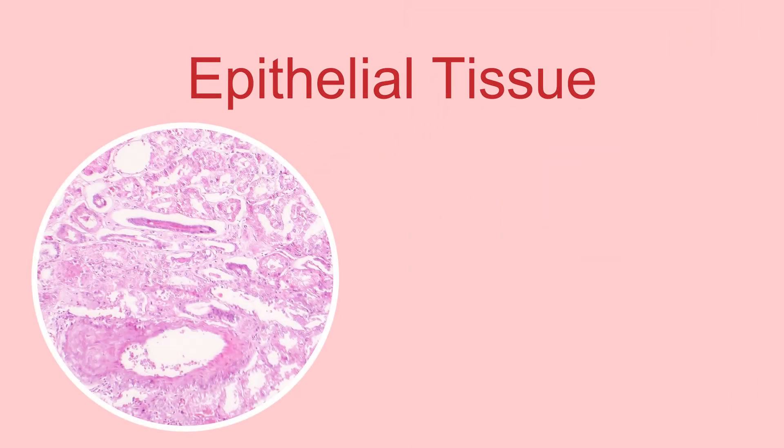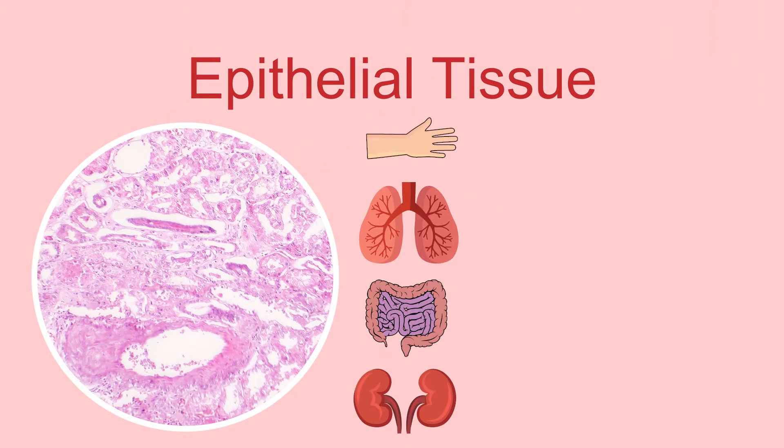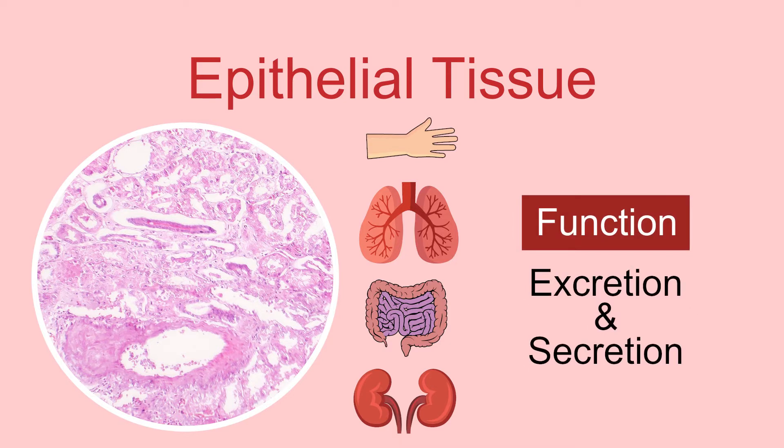Epithelial tissues can be found in skin and the walls of digestive, respiratory, and kidney tubes. Some may function for excretion and secretion.